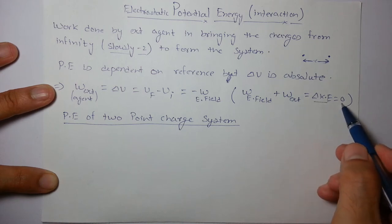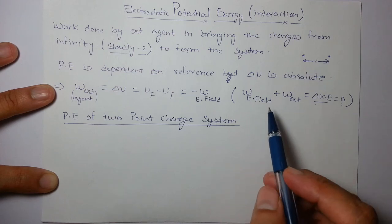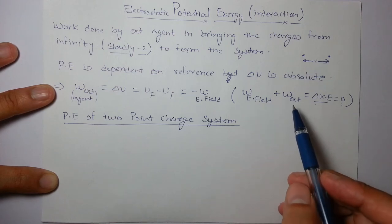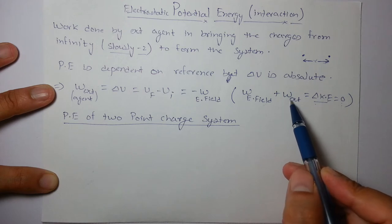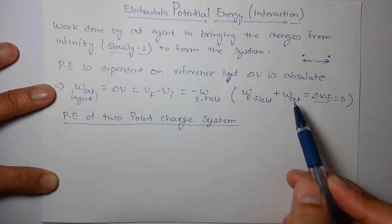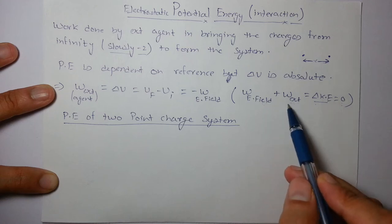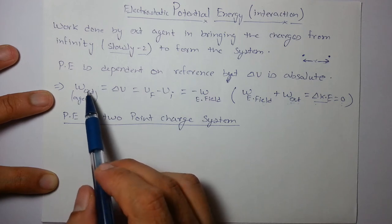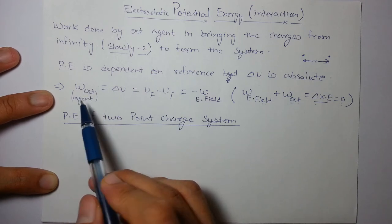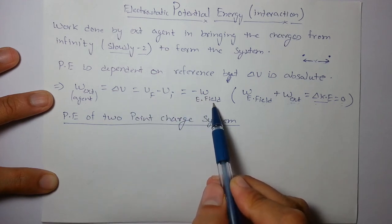Since we are not providing any kinetic energy, delta KE will be zero, meaning the total work done is zero. There are only two forces: the external force and the electric field. So the work done by the electric field plus the work done by the external force equals zero — they perform equal and opposite works. As per our definition, work done by the external agent equals the change in potential energy, which can also be written as minus of the work done by the electric field.